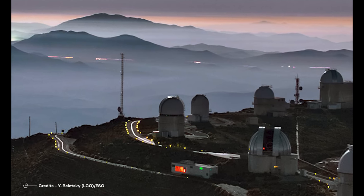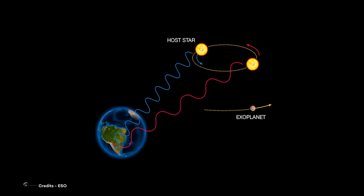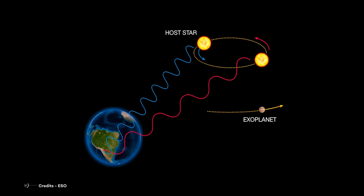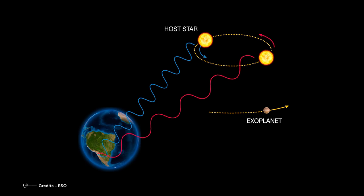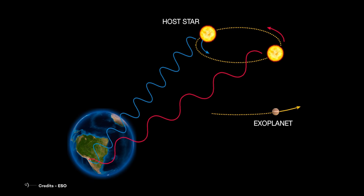HARPS actually became operational in February of 2003, and since then it was used to detect exoplanets based on measurements of the variations of the radial velocities of stars subject to gravitational forces of bodies rotating around them.